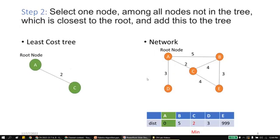In Step 2, select the node which is closest among all nodes not yet in the tree and add it to the tree. Considering root node A, its neighbors are B, C, and D. Among these, C is the closest, highlighted in red. Add C to the tree. This is the tree formed after adding the new neighbor C, with a cost of 2.